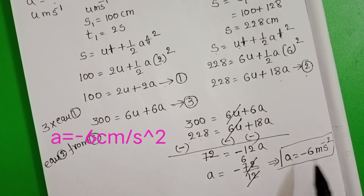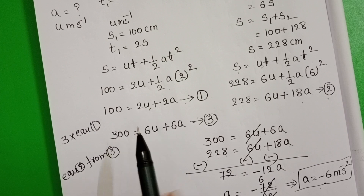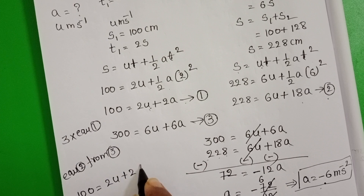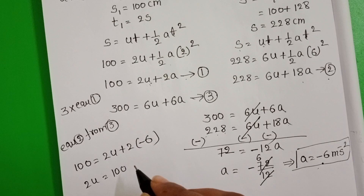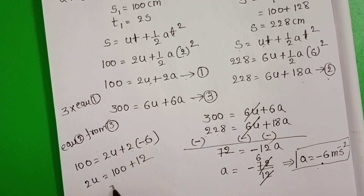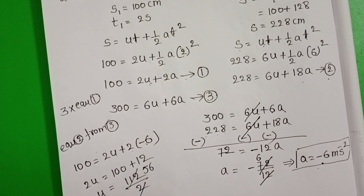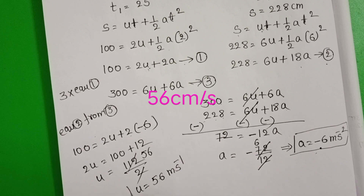Now, using the acceleration value, find the initial velocity of the body. Substituting A = −6 into Equation 1: 100 = 2U + 2 × (−6), so 100 = 2U − 12, giving 2U = 112, and U = 56 cm/s. The initial velocity of the body is 56 cm/s.